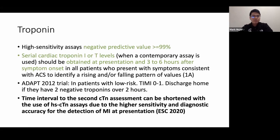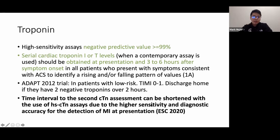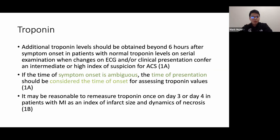High-sensitivity troponin assays have a negative predictive value of more than 99%. The 2014 ACC/AHA guidelines recommended troponins at presentation and three to six hours after symptom onset using contemporary assays. The ESC 2020 guidelines recommend obtaining troponin at presentation and one hour after, since high-sensitivity assays detect rises earlier. If time to symptom onset is unclear, use the time of presentation as the onset.